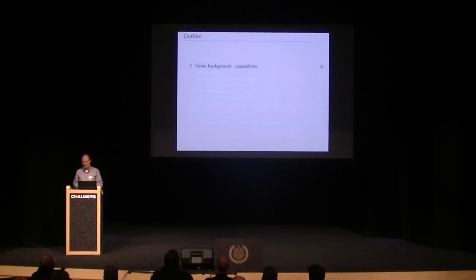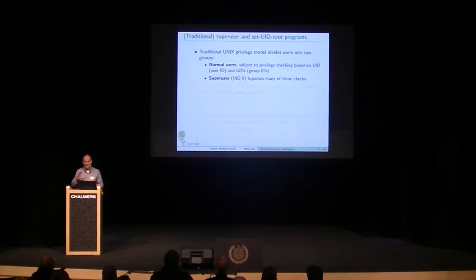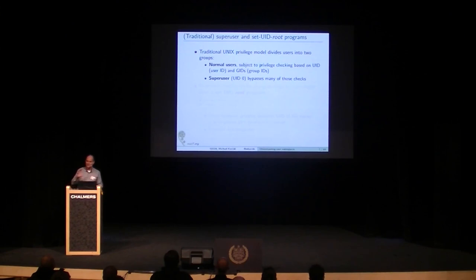Capabilities on Linux are about solving a certain problem. The traditional Unix privilege model divides processes into two categories: there's normal unprivileged users — unprivileged processes that are subject to a lot of permissions checks — and then there's a superuser who can bypass all of these checks, or at least most checks. So we've got this very coarse-grained privilege model with two classes of users.